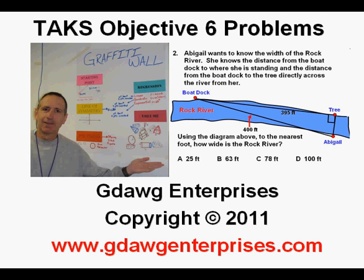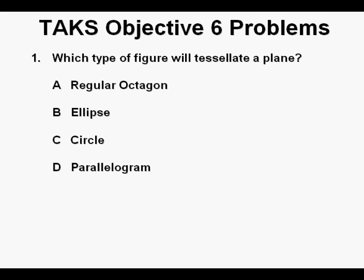TAKS Objective 6 Problems. Problem 1: Which type of figure will tessellate a plane? This problem, as much as any problem I can think of, tests a knowledge of geometry vocabulary.